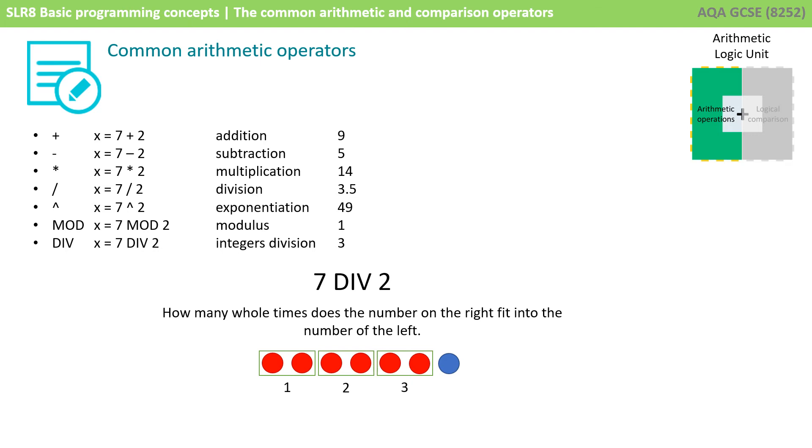That's important. Integer division is very different from normal division. With normal division, 7 divided by 2 is 3.5. With integer division, using whole numbers, 7 div 2 is 3.